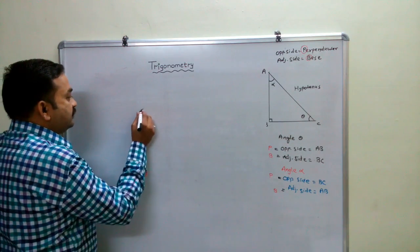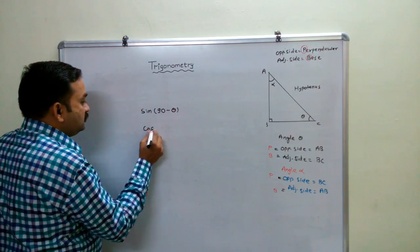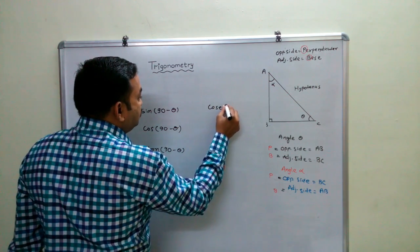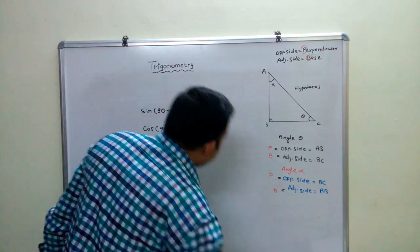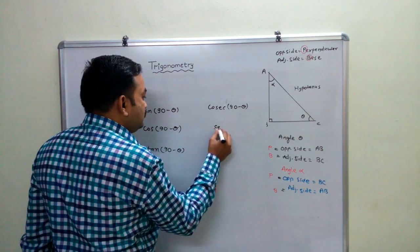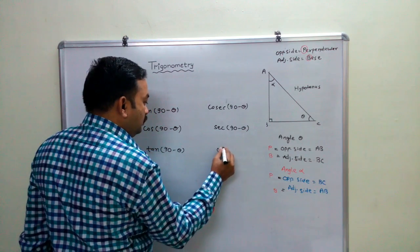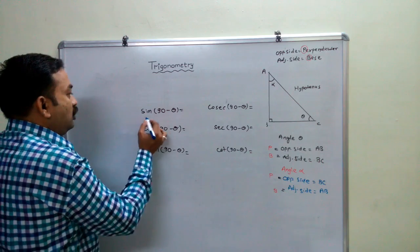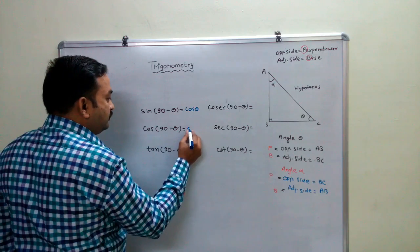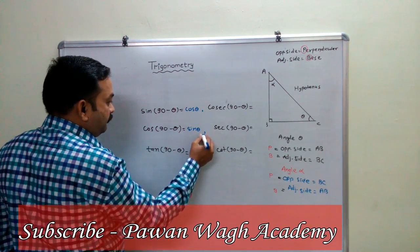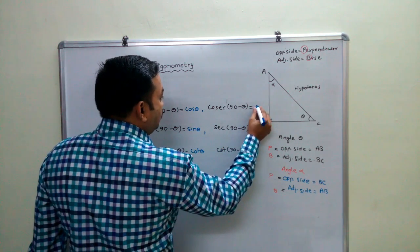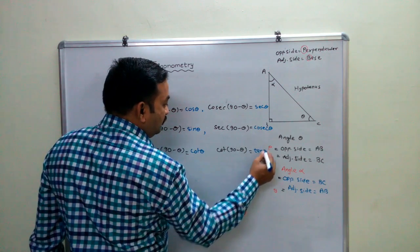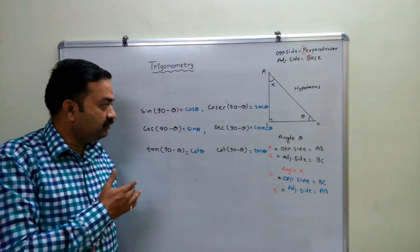Now, a few more things we have studied: sin(90° − θ), cos(90° − θ), and tan(90° − θ). These complementary angle formulas are very important and are frequently used. All these things you have already studied; I am just revising them.